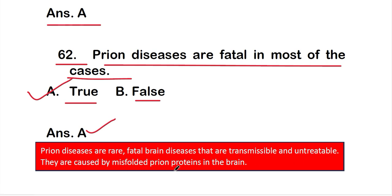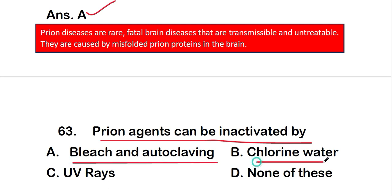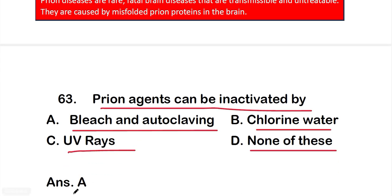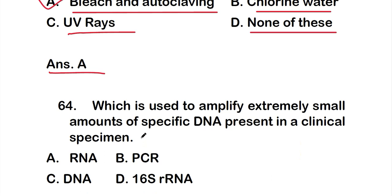Question 63: Prion agents can be inactivated by — option A: bleach and autoclaving, option B: chlorine water, option C: UV rays, option D: none of these. The right answer is option A: bleach and autoclaving. Prion agents can be inactivated by bleach and autoclaving.